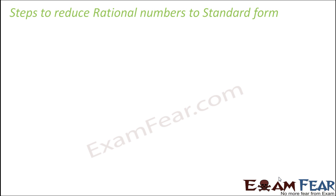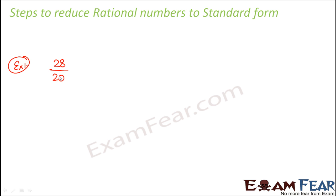Now let us understand the steps to reduce a rational number to standard form. We can create equivalent rational numbers by multiplying numerator and denominator by the same number, so all equivalent numbers should reduce to the same standard form. Take example one: the rational number 28 by 20. We need to decide whether it is already in standard form by finding the factors of 28 and 20.